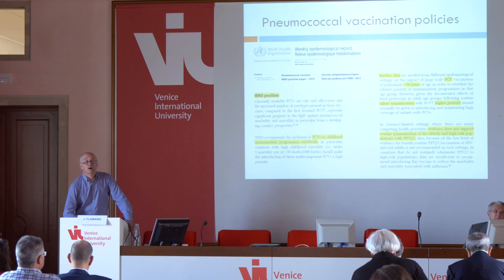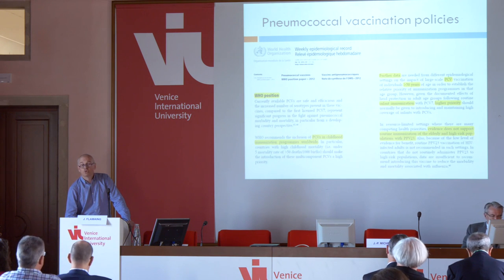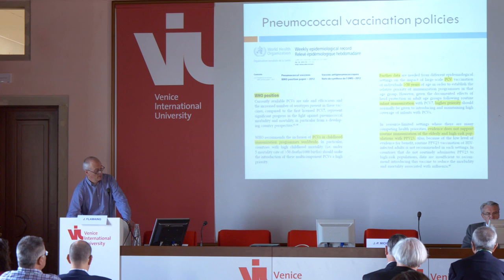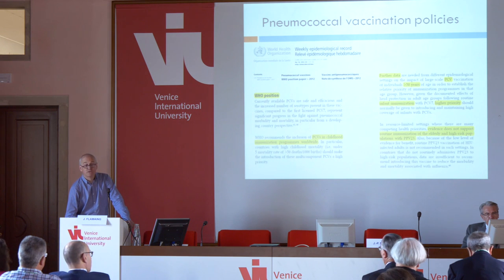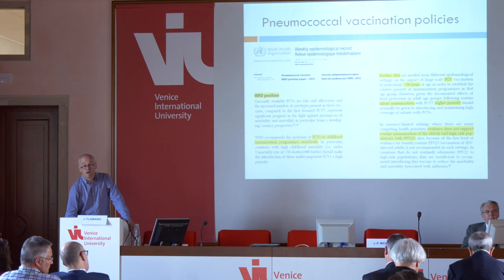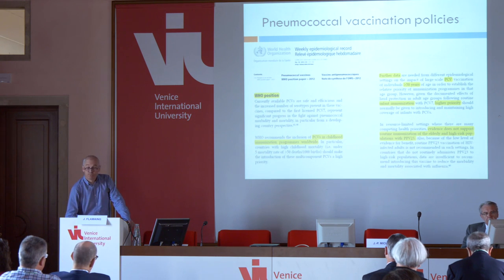There are some policies on pneumococcal vaccination that are somewhat puzzling and also provoke different viewpoints and controversy. This is the WHO position paper on pneumococcal vaccination. They state that pneumococcal conjugate vaccination in childhood is very important and should be introduced in the immunization program for children in all countries. They also say that for the adult population, the use of conjugate vaccines needs further data, and that the highest priority should be introducing the conjugate vaccines in children.